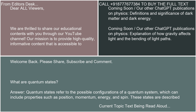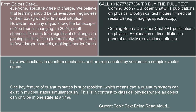Quantum states refer to the possible configurations of a quantum system, which can include properties such as position, momentum, energy, and spin. These states are described by wave functions in quantum mechanics and are represented by vectors in a complex vector space.